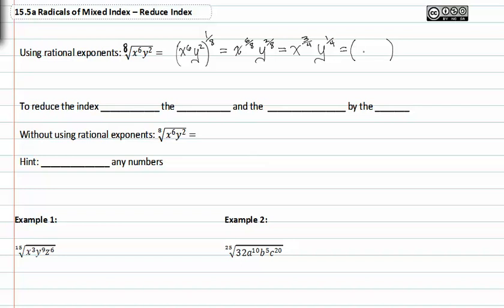We could rewrite it as x to the third and y to the first, all raised to the one fourth. You can always check to see if this is correct simply by multiplying that fractional exponent back through to each exponent inside parentheses and see if you get back to this point.